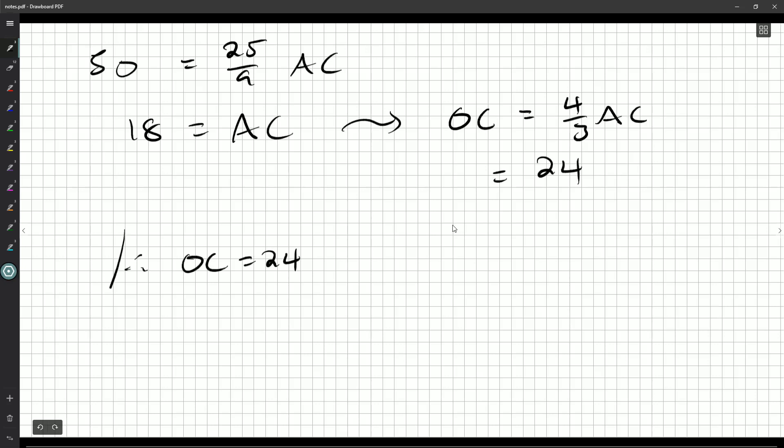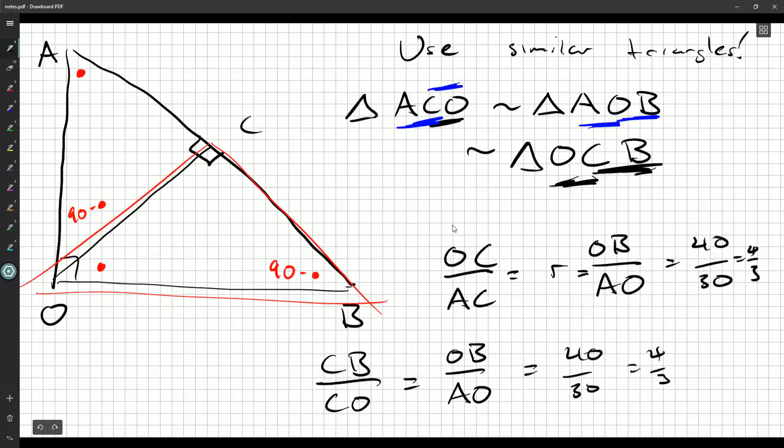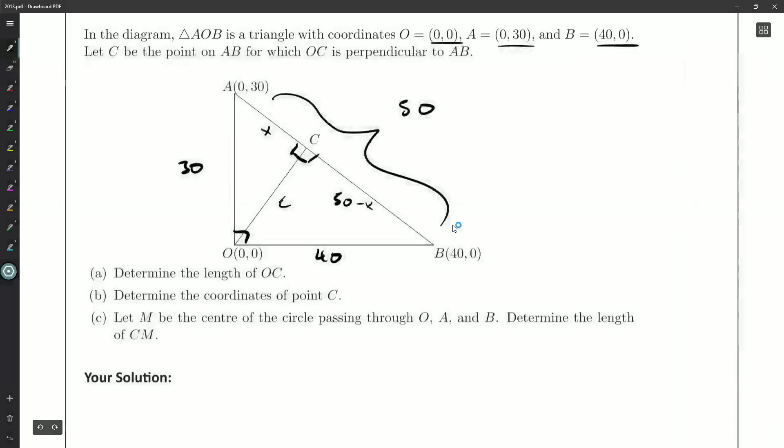So OC is 24. I'm sure this is not the only arrangement you could do with similar triangles to figure it out, but I think it's a little easier than doing a bunch of algebra involving X's and 50 minus X's. I think it's just a little cleaner. So B part: determine the coordinates of point C.